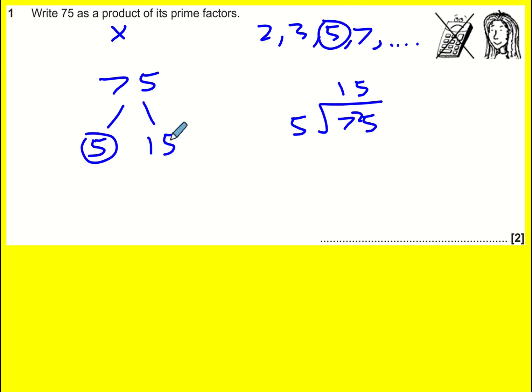15 is not a prime, it ends in a 5, 5 goes into it again, and it's 3 times 5 this time, and both of these are prime, and so we're finished.